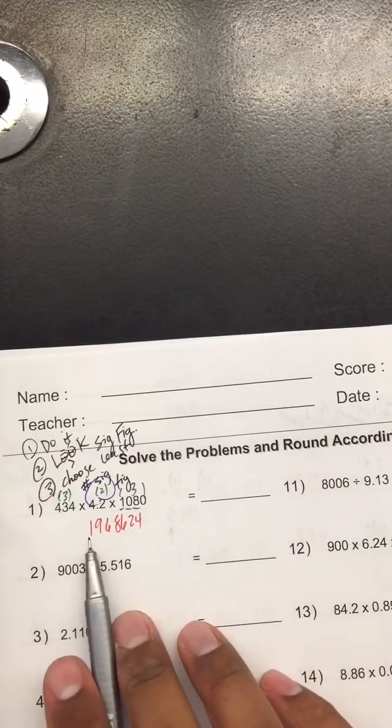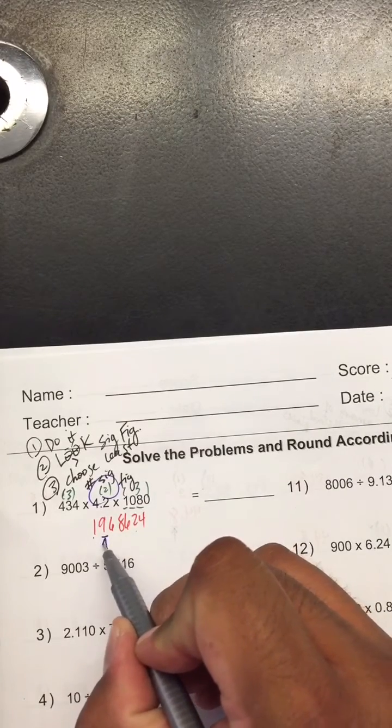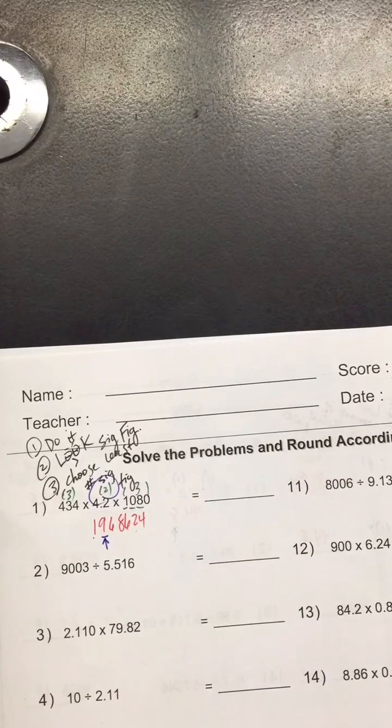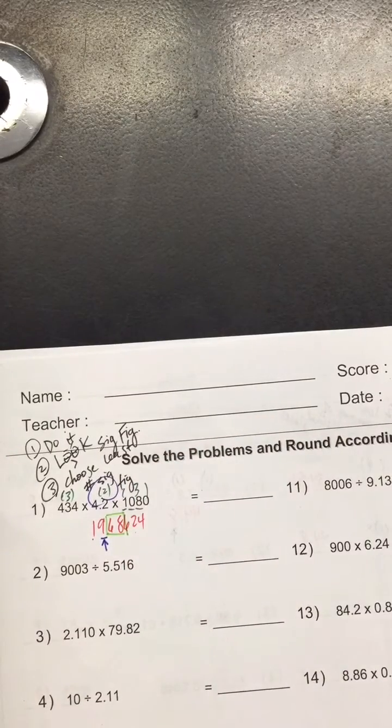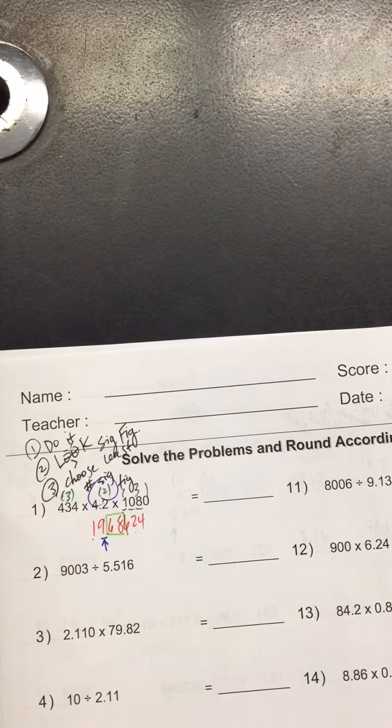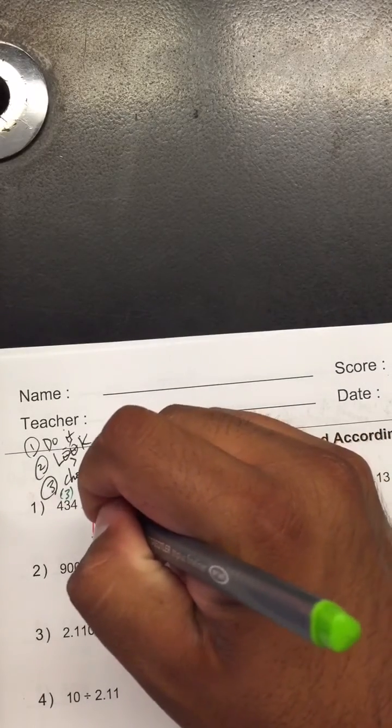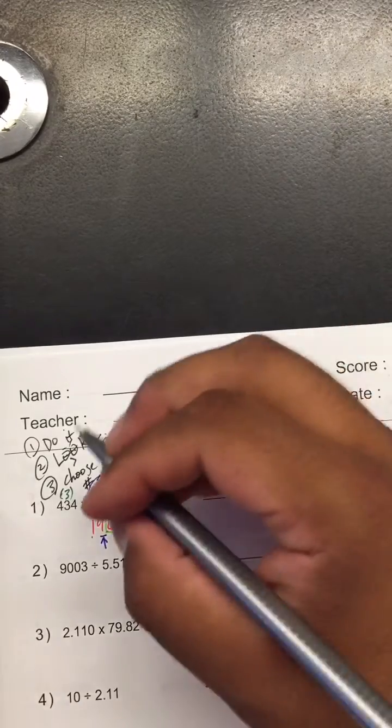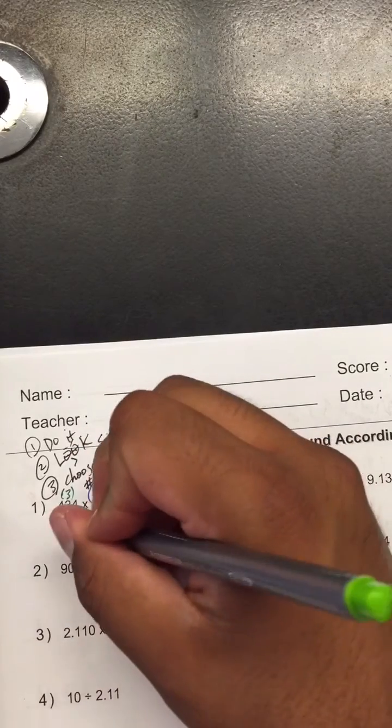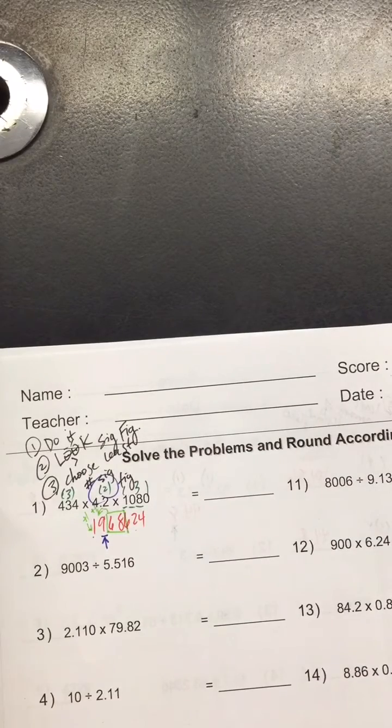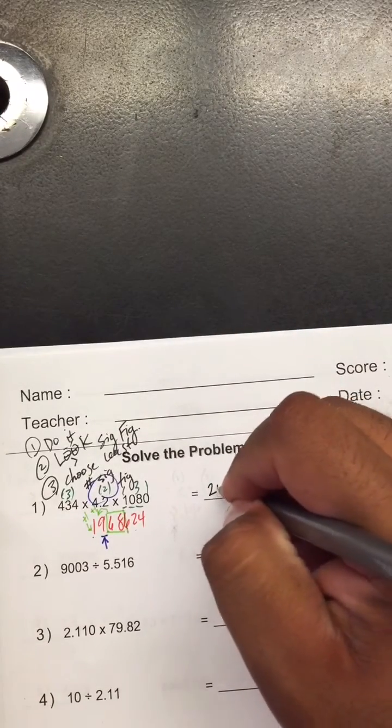That means we're gonna count from all the way from the left, no decimal involved. Count one, two, so that means we're gonna round right there. Now you're gonna box in the next two values, which is gonna be those two. If you notice that number is greater than 50, so therefore you're gonna promote one to the nine. When you promote one to the nine, it's gonna make it ten, so you gotta promote one to the other one as well. So now we're gonna end up in a little problem.